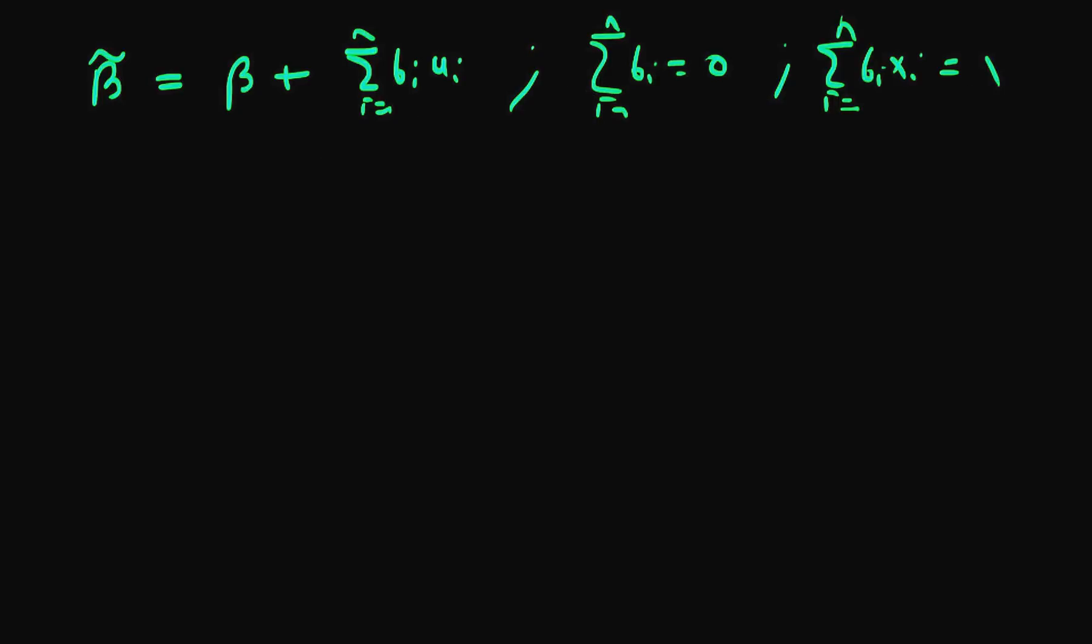Let's assume that our weights bi are equal to our least squares weights, which I'm going to call vi, plus some difference. I can assume that without loss of generality and put this into the above relationship.